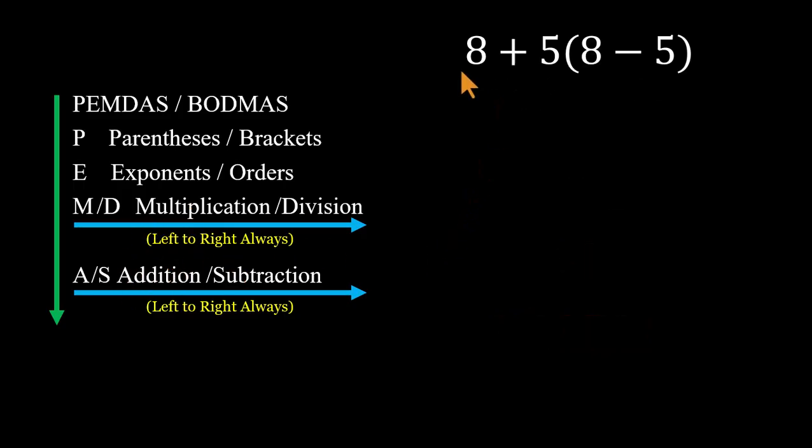So let's solve this one the right way. Step 1. Start inside the parentheses. 8 minus 5 equals 3. Now our expression becomes 8 plus 5 times 3.